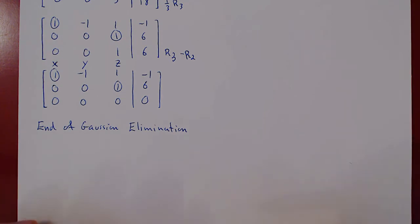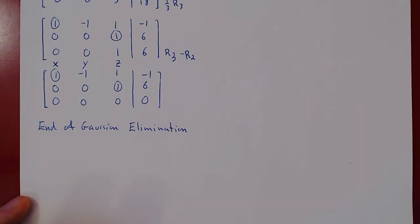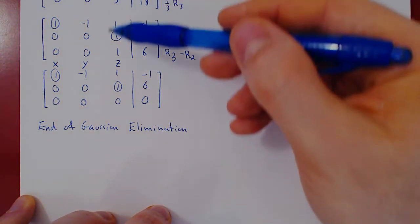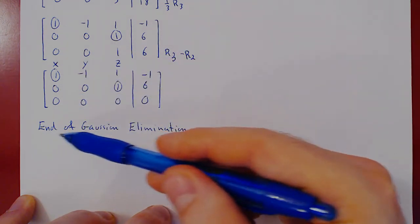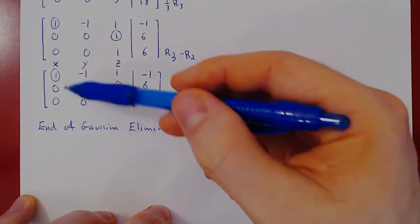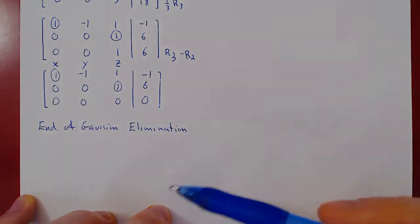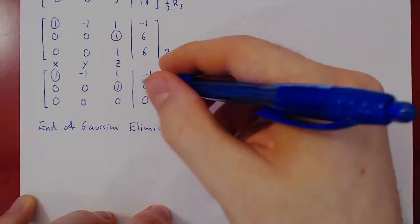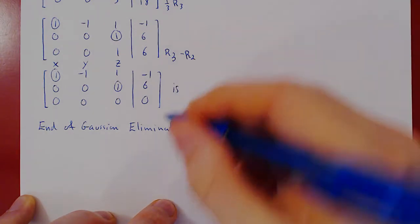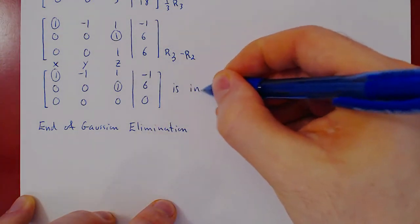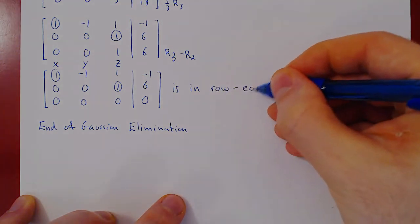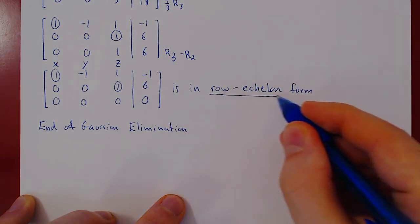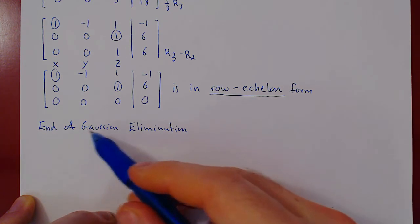Here we do not use backward substitution; instead we use Gauss-Jordan elimination. A bit of terminology: when you row reduce a matrix and stop after getting every possible leading one with zeros below and any rows of zeros at the bottom, that form of the matrix has a special name — it's called row echelon form. The matrix at this point, once we're done with Gaussian elimination, is in so-called row echelon form.